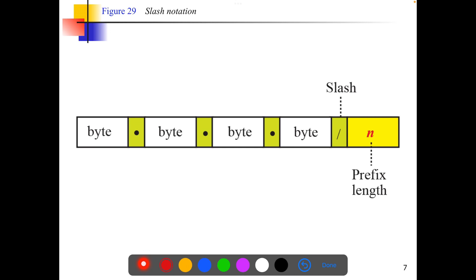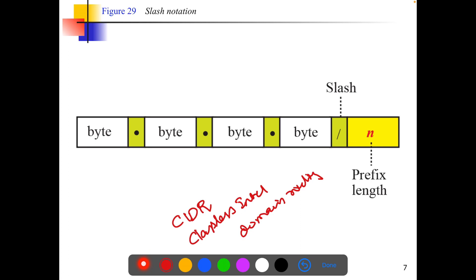This notation is called CIDR — Classless Inter-Domain Routing. The format is: first byte, second byte, third byte, fourth byte, then a slash followed by the prefix length. The prefix length can range from 1 to 32, and this is how we fix the prefix length in classless addressing.